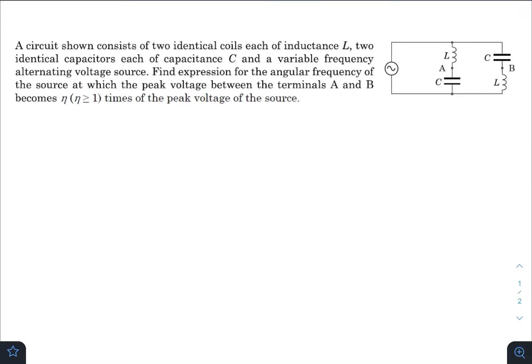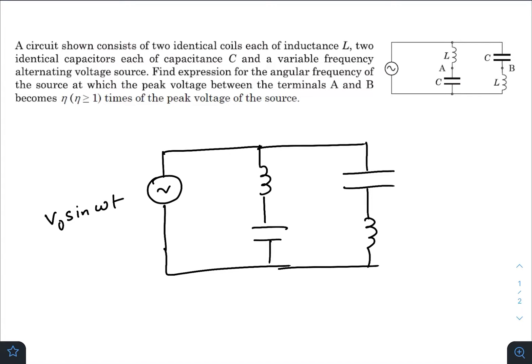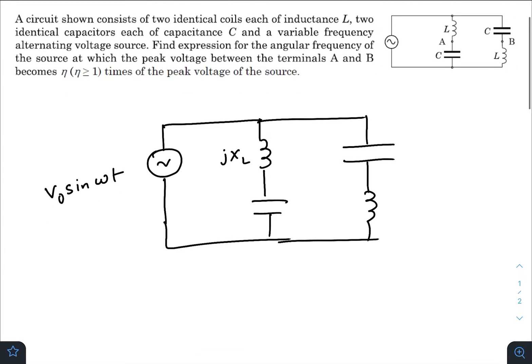So let us redraw the circuit once again: inductor, capacitor, capacitor, and an inductor. Let us consider the voltage source. If we write in complex form the impedance of each component, it will be -jXC, again -jXC, jXL, and jXL. This one is point A, this one is point B.